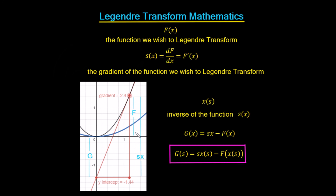We don't want the height in terms of x; we want it in terms of our new independent variable x of s. So we replace x with x of s. This finally gives us the Legendre transform as a function of our new independent variable s, such that g of s equals s times x of s minus f of x of s. This is the Legendre transform of our function, and this is the analytical method we have been deriving throughout this video.